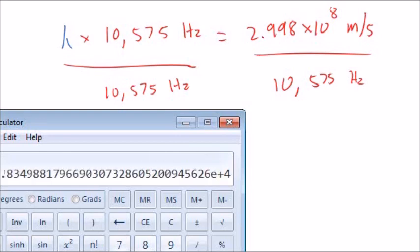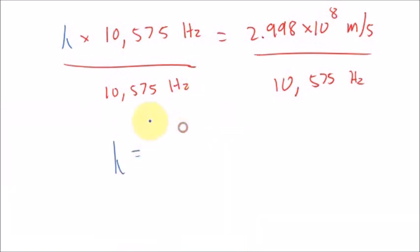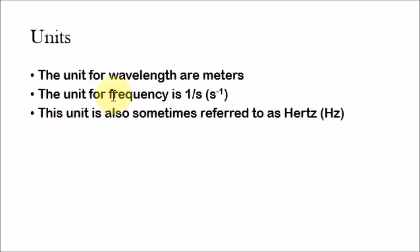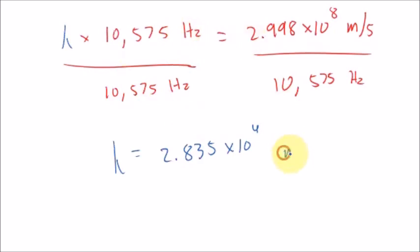Put that back in scientific notation and we get 2.83498 times 10 to the fourth. Applying significant digits: this number has four significant digits, this number has five, so we go with four. The answer rounded to four significant digits is 2.835 times 10 to the fourth. The unit for wavelength is meters, so our answer is 2.835 times 10 to the fourth meters. Pretty simple — it's just an equation, very easy to use. Make sure you do a few practice problems and get familiar with it.